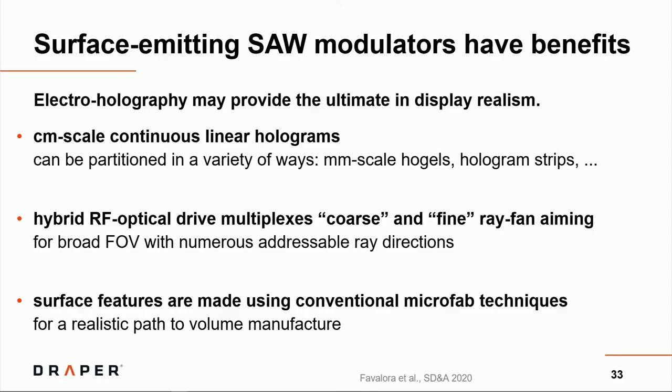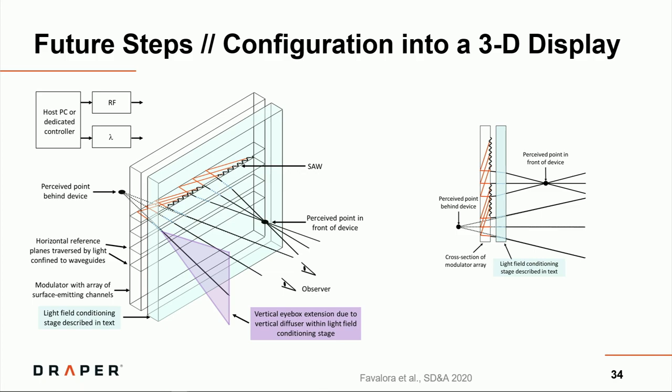Wrapping up, surface-emitting SAW modulators have a number of benefits. For many decades, electro-holography has been believed to provide the ultimate in display realism if only someone would go and build a real electro-holographic display of appreciable size. We've shown the capability of centimeter-scale continuous linear holograms, not space-discreet ones as you'd get from a pixelated SLM. You can partition it in data space however you want. We've also today disclosed this hybrid RF and wavelength-based multiplexing for coarse and fine ray fan aiming. The future steps we're going to take in the exploration of the device could include arraying multiple rows at once and experimenting with the multi-wavelength drive and then combining it with a so-called light field conditioning stage to further expand the field of view.